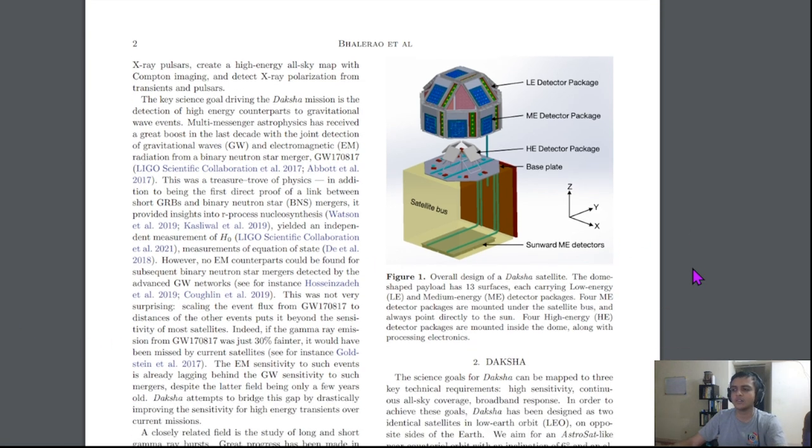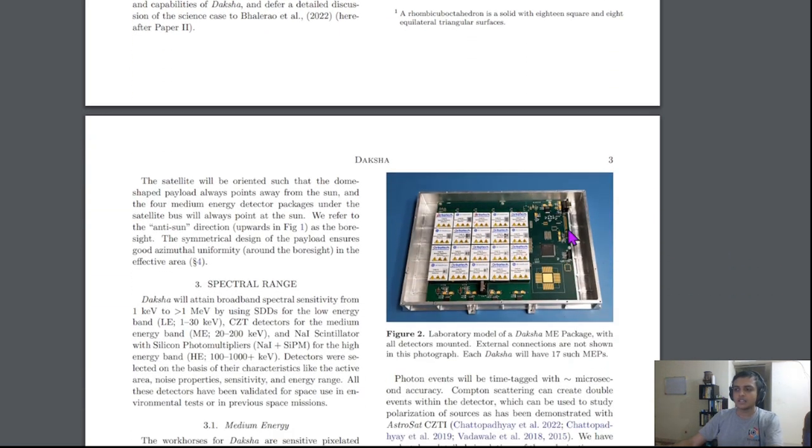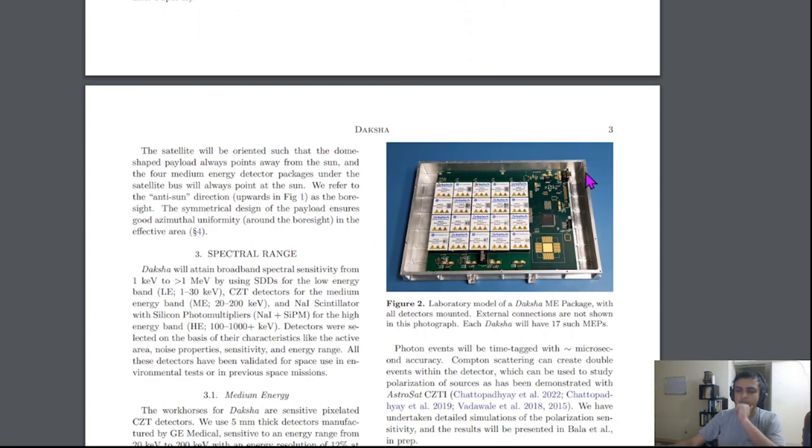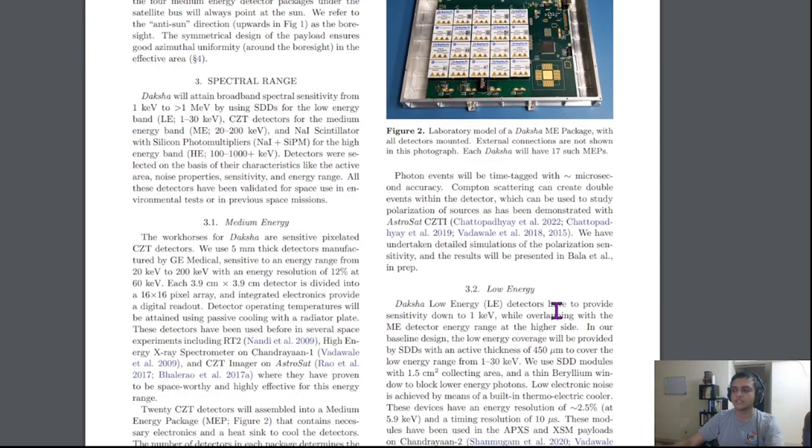Let us go into the details of the paper. Low energy uses silicon drift detectors, cadmium zinc telluride for medium energy, and NaI scintillators for high energy. This is how one of the medium energy packages would look like. This is something I have been working on since the past year, trying to understand the detectors, the digital interface, the physics, and also the field programmable gate array which is used to collate data from these detectors and send it around the satellite so that we can detect transient events.